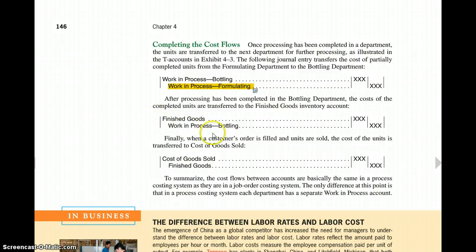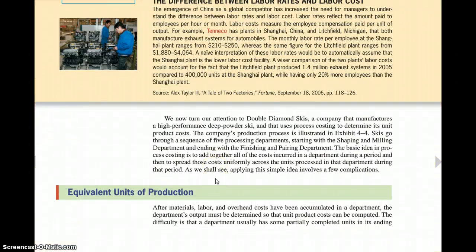Here you can see, again, the work in process bottling, which was our debit in the other one up right here, being credited, because this account is now decreasing as we move the work to finished goods. And finally, the inventory is sold. When the inventory is sold, we no longer have it. We need to decrease finished goods with a credit, and we're going to recognize the cost of the inventory. Remember, because of the matching principle, we want to recognize the cost of the inventory at the time of the sale.